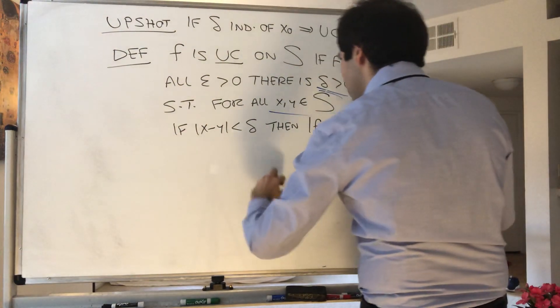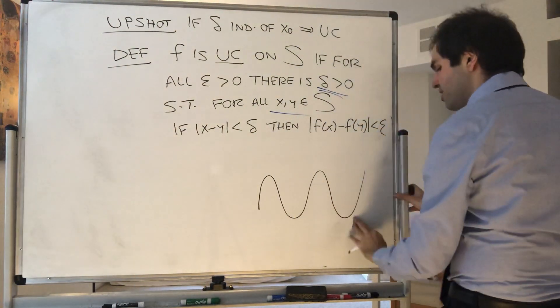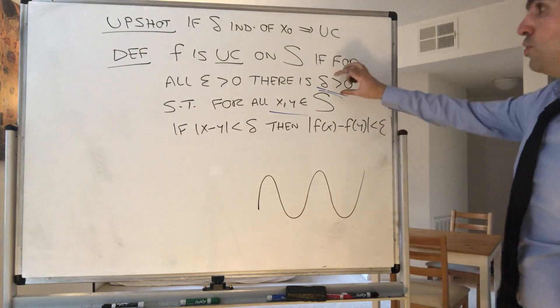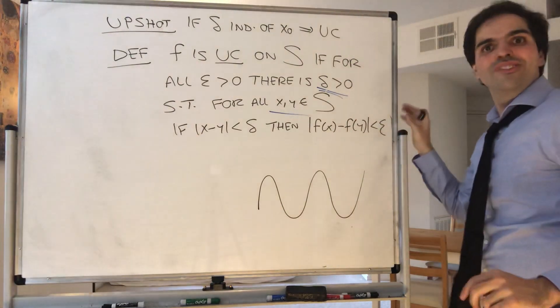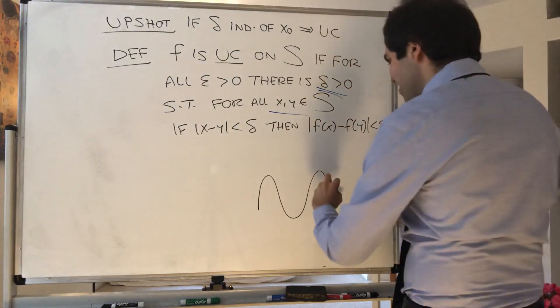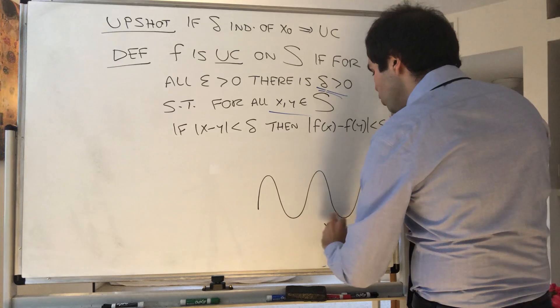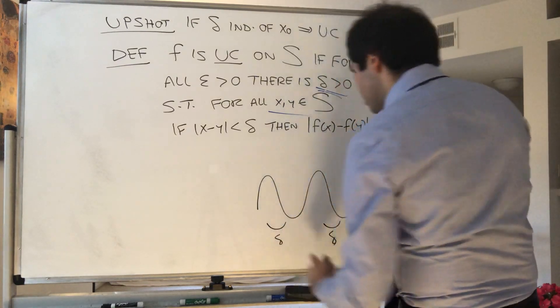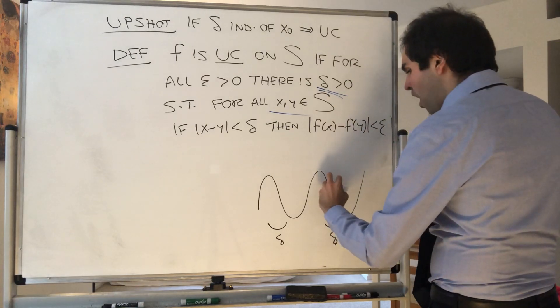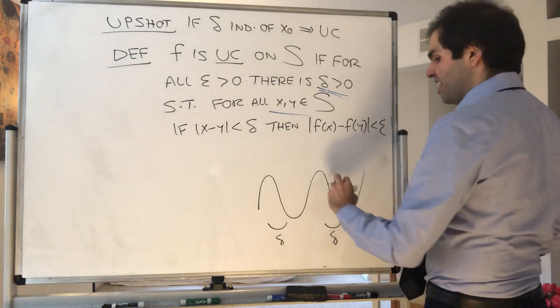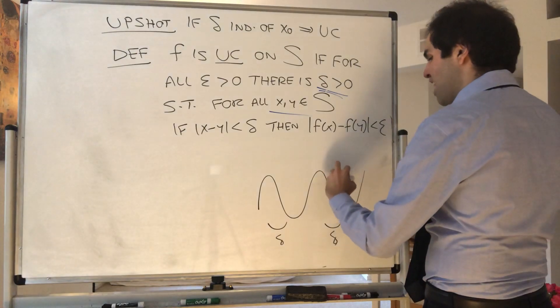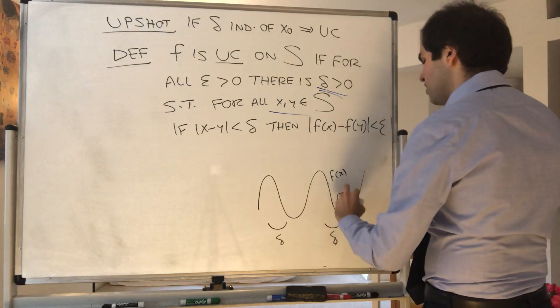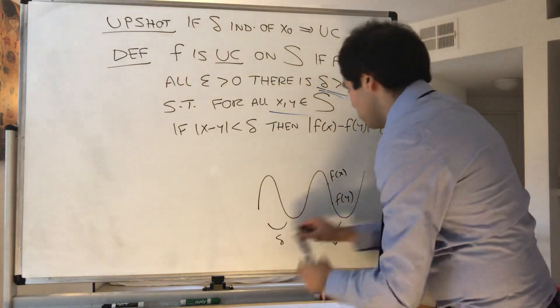So for instance, if you take this function, actually sine of x, UC—not UC Irvine, but they're equally awesome—means there's a universal delta such that if x and y are in that region of size delta, then f of x and f of y are at most epsilon apart.